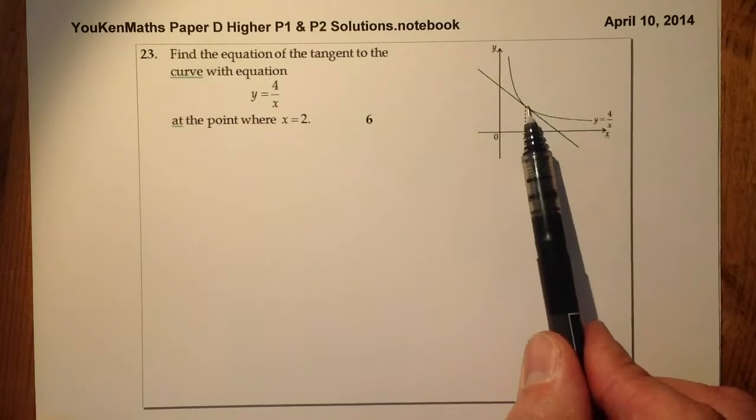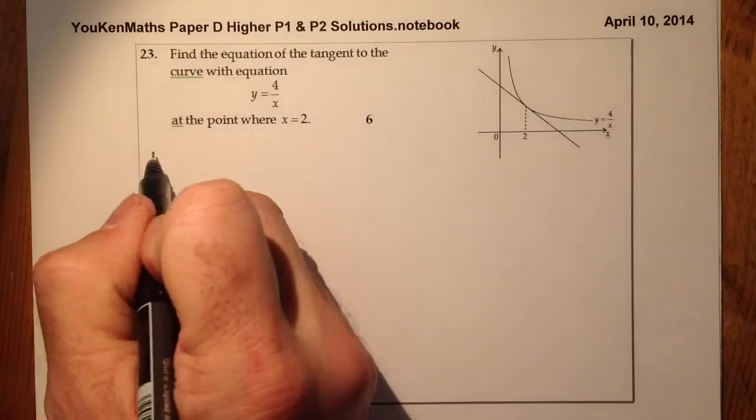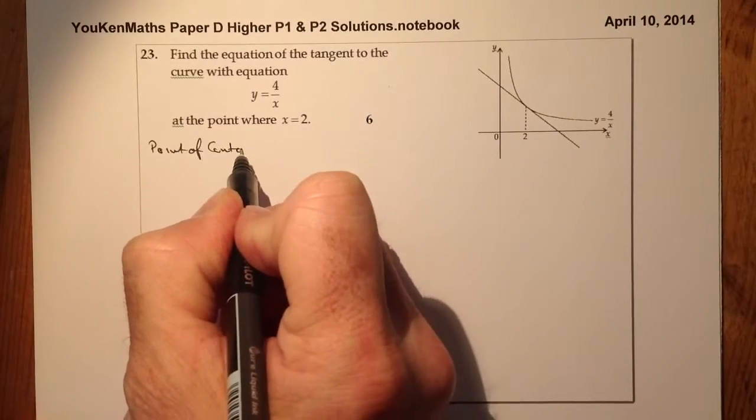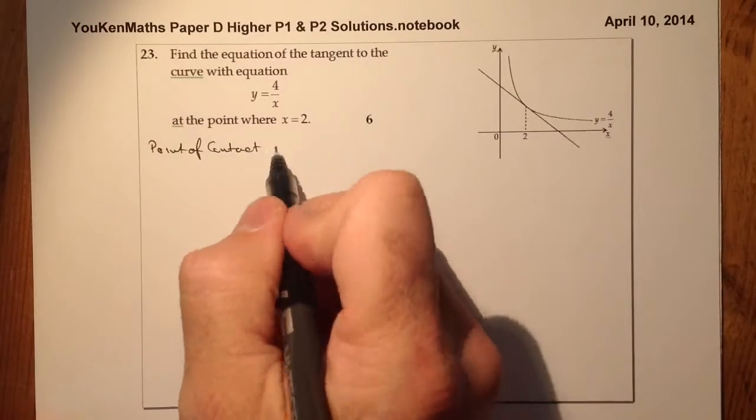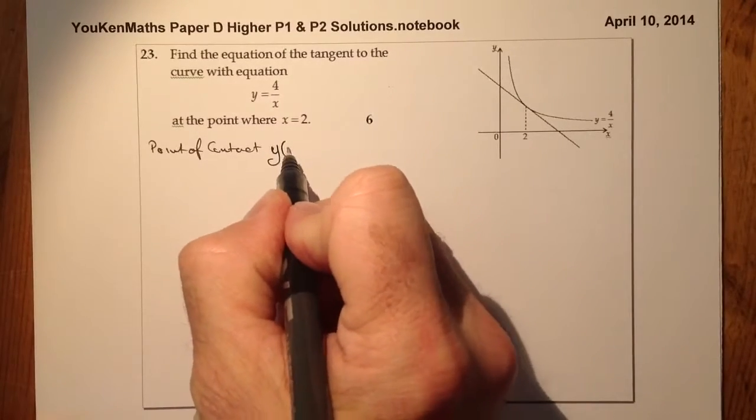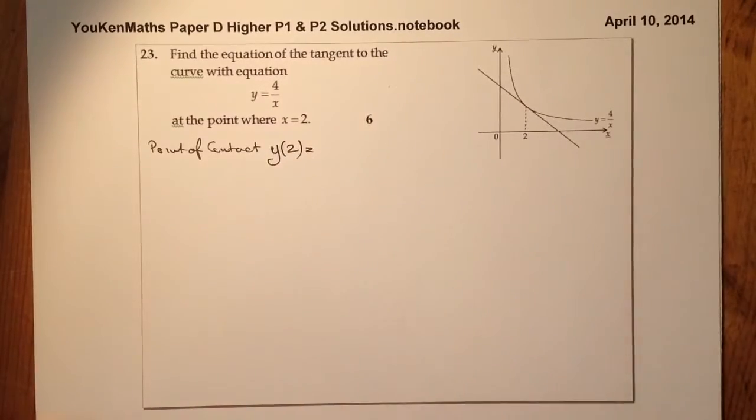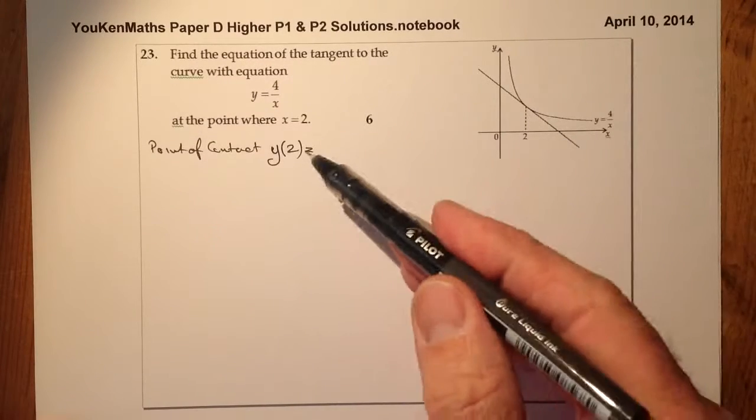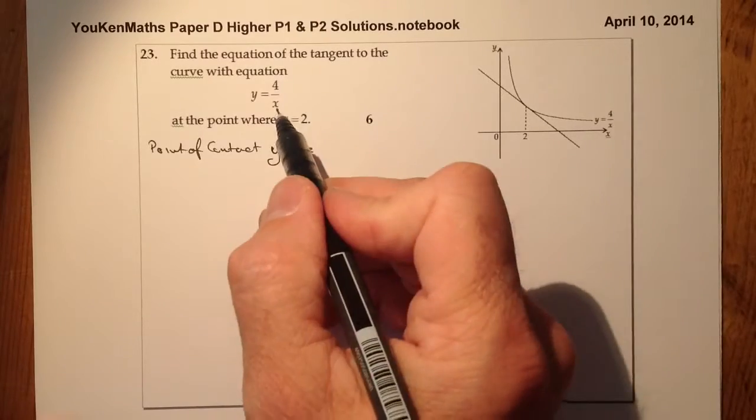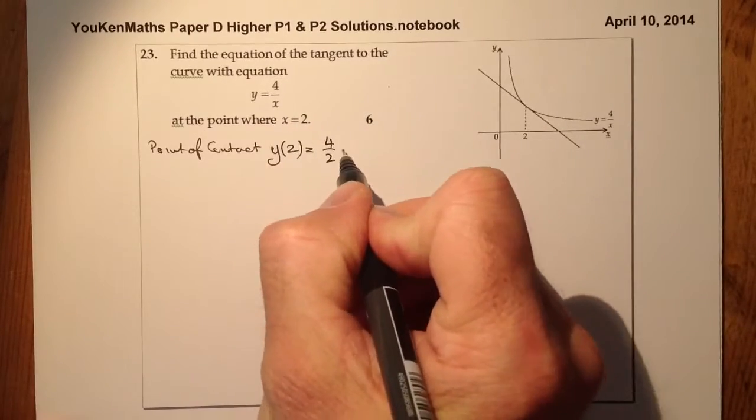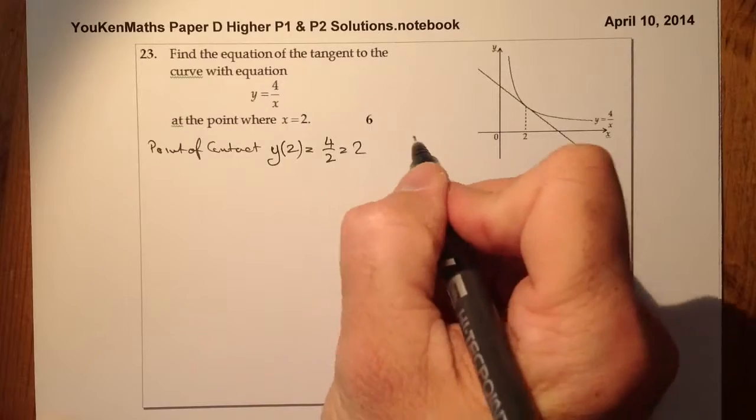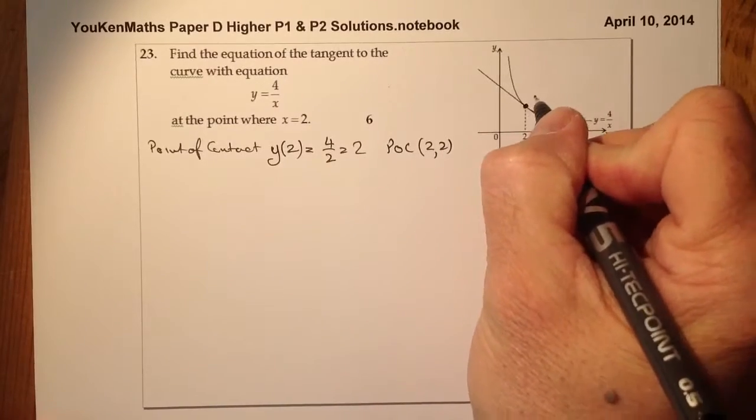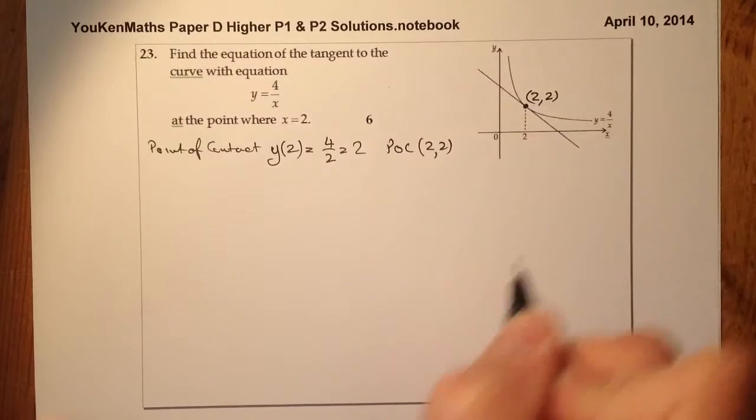First of all, let's find the point of contact. The point of contact is going to be when the y value corresponds to x equals 2. So I'll substitute a 2 in where I see the x, so that's just going to be 4 over 2, which gives me 2. So the point of contact is 2, 2. So this point here is the point 2, 2.